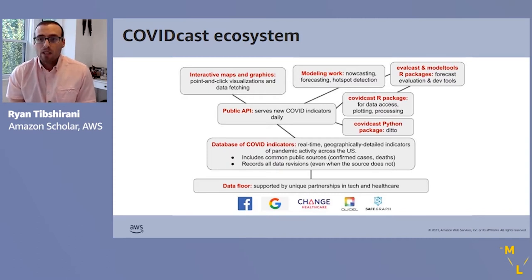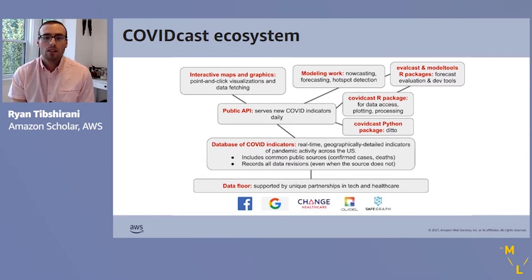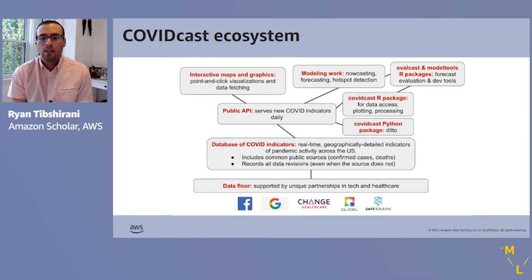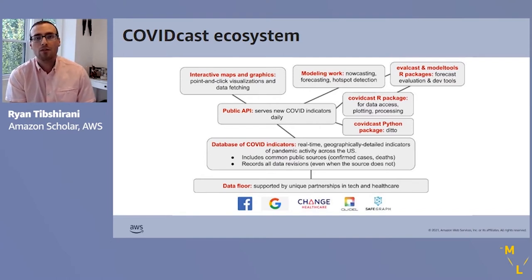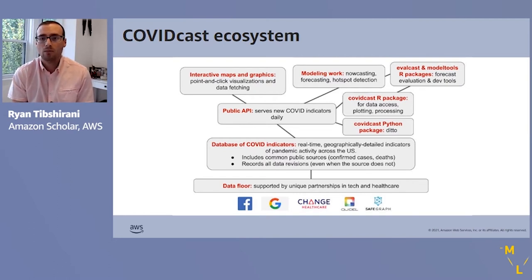One level up is the API and supporting software we've written for easy data fetching, processing, and plotting — all publicly and freely available through our GitHub. And one level on top of that is the most user-facing work, split into two sides: on the left, our interactive maps and graphics for point-and-click visualizations and data fetching; and on the right, our most technical work using these indicators to boost nowcasting, forecasting, and hotspot detection models.